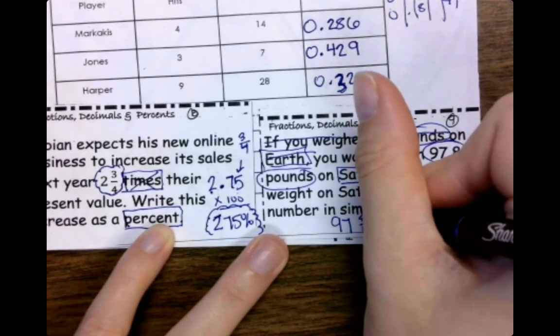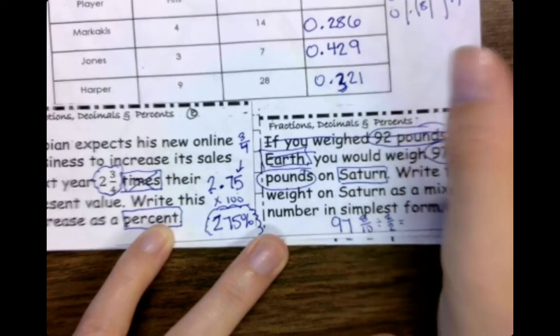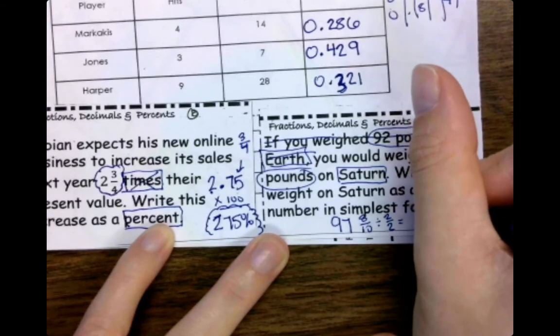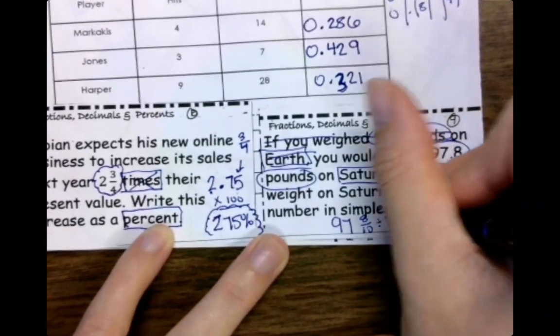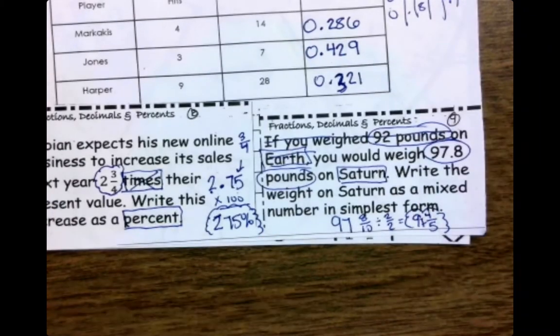Well, both those can be divided by two, and that would be four-fifths. Keep my 97. All right, and that is all you are doing.